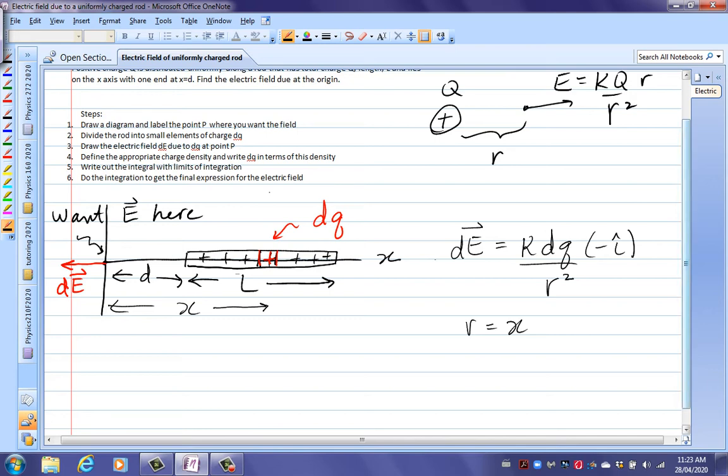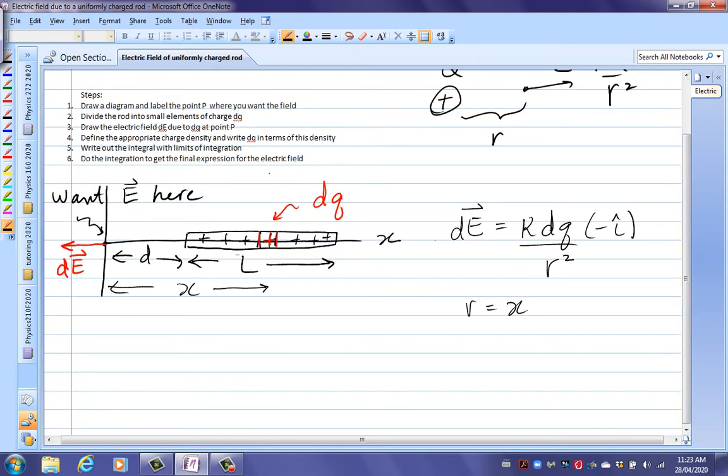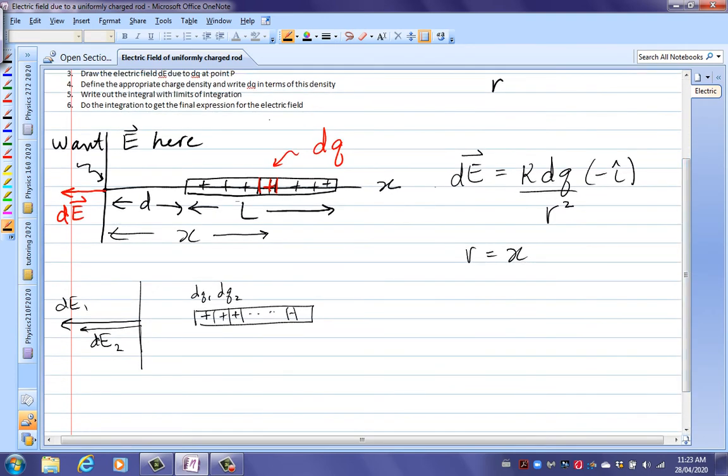Now, the field from each of these little bits of charge, like if you look at what's going on with this line of charge, the dq at this end is quite close, so that would have quite a big dE. We'll call that dE1, if this was dq1. And then the next little piece, dq2, would be, because it's a little bit further away, it would have a slightly smaller electric field, dE2. And so on, as we move along the rod, all the dEs that we're trying to add together all have different lengths. That's why we have to integrate. So by the time you get to the end, you're so far away that the last little dE is tiny.